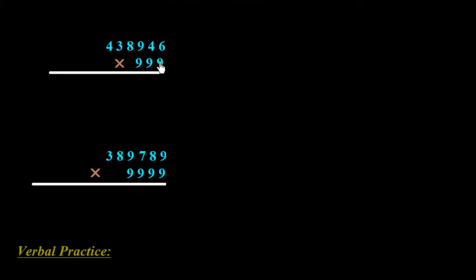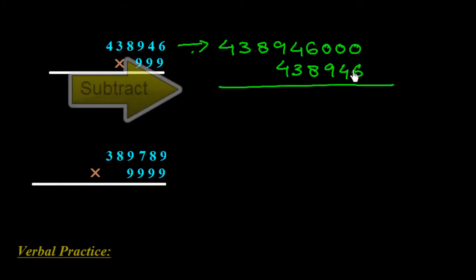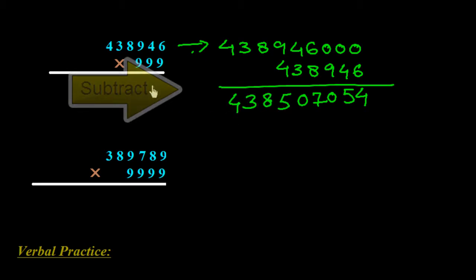Here is one more example: 438946 multiplied by 999. We add 3 zeros because there are three 9s in the series, giving 438946000. Now we subtract 438946 from this. So: 10 minus 6 is 4, 9 minus 4 is 5, 9 minus 9 is 0, 15 minus 8 is 7, 3 minus 3 is 0, and 9 minus 4 is 5 — giving the answer 438507054.